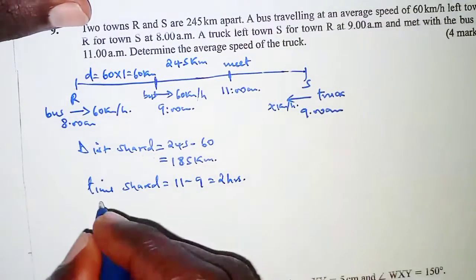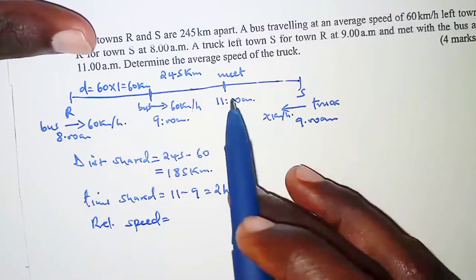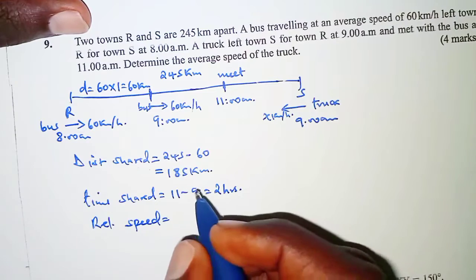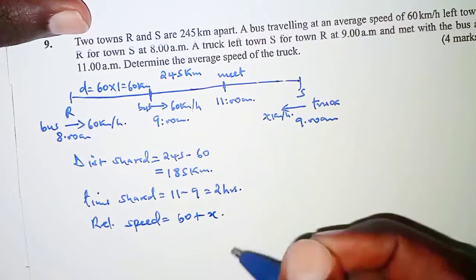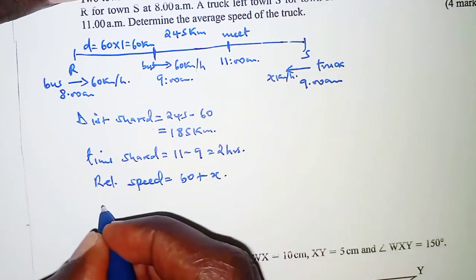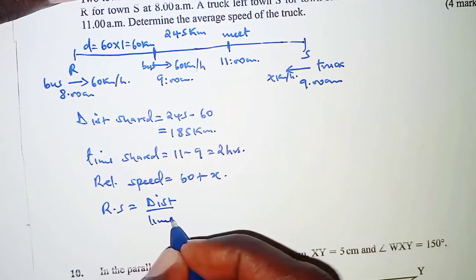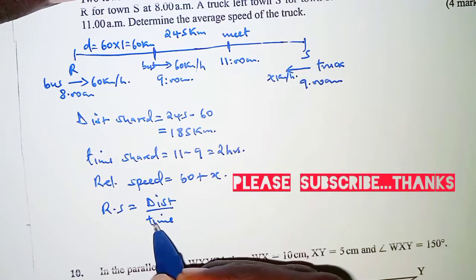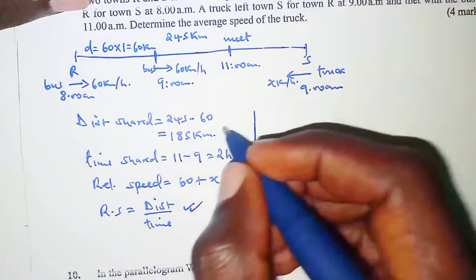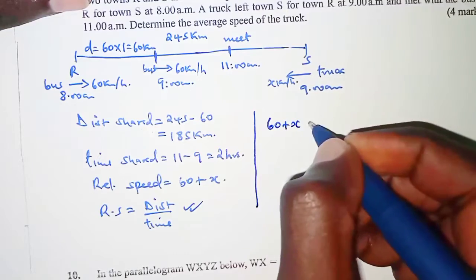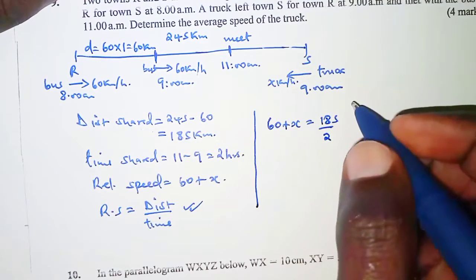We also need to know the relative speed. Since the truck and the bus are approaching each other, the relative speed is obtained by adding their speeds: 60 plus x. Relative speed equals distance over time, so we equate 60 + x to the shared distance of 185 over the shared time of 2.